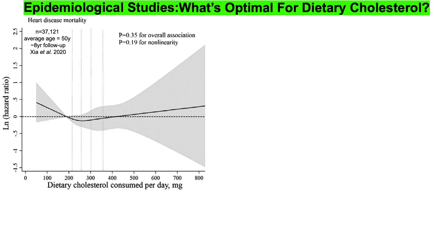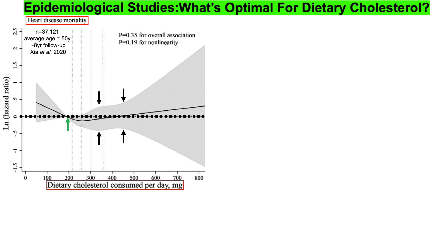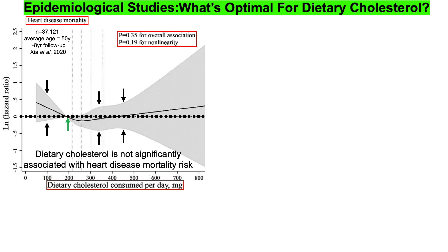Here we can see heart disease mortality risk plotted on the y-axis against dietary cholesterol intake on the x-axis. This was a study of about 37,000 people with an average age of about 50 years and an eight-year follow-up. When the shaded gray region is either completely above or completely below the dotted line, we have statistical significance. When compared with the referent, defined as a bit below 200 milligrams of dietary cholesterol per day, relatively higher and lower values were not statistically associated with heart disease mortality risk.